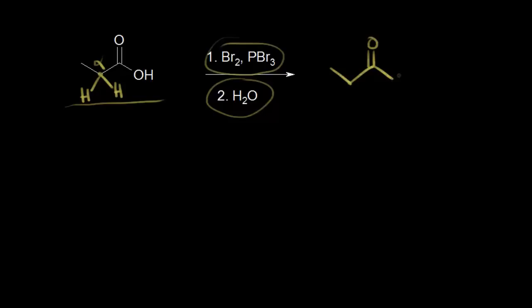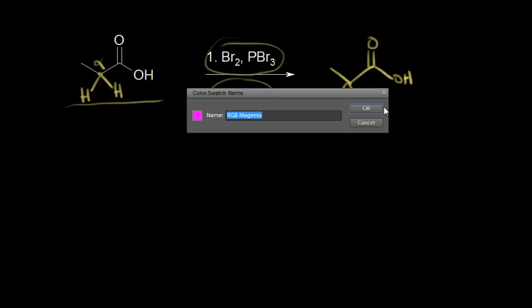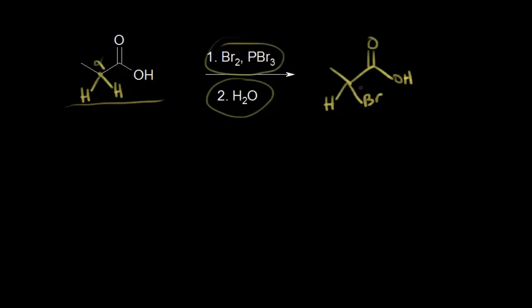We already know what the product looks like for the HVZ reaction: we draw in our carboxylic acid with a bromine substituted at the alpha position, and there's still a hydrogen bonded to this alpha carbon. Thinking about this alpha carbon, there are four different substituents attached to it, so we're thinking about stereochemistry — this is a chiral center, and so you're going to get a mixture of enantiomers for your product.